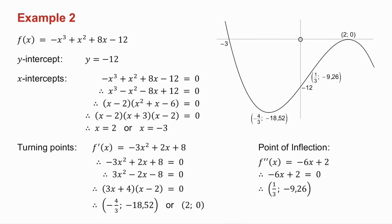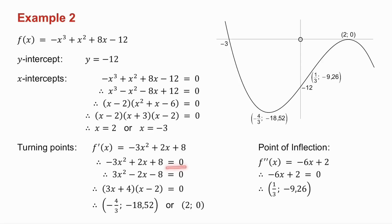The y-intercept is minus twelve. To get the x-intercepts I make y equal to zero and I only get two x-intercepts. When there are two x-intercepts, one of them will actually be a turning point — whichever one has the repeated bracket will not only be an x-intercept but also a turning point. I then get the derivative, make it equal to zero to find the turning points, solve for x, and substitute back into f of x to get the corresponding y-values.